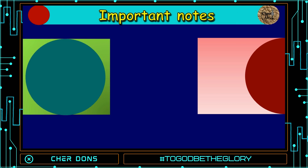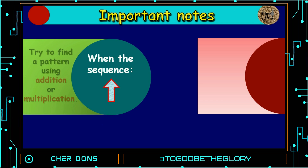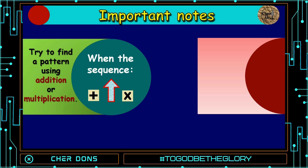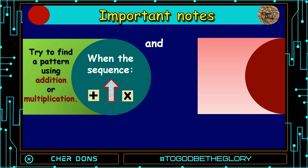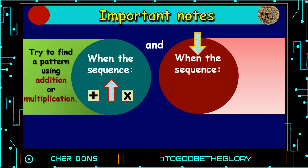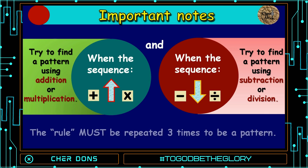Take note that when the sequence is going up, try to find a pattern using addition or multiplication. And when the sequence is going down, try to find a pattern using subtraction or division. The rule must be repeated three times to be a pattern.